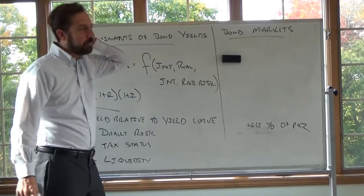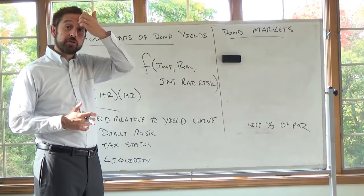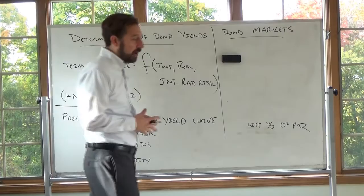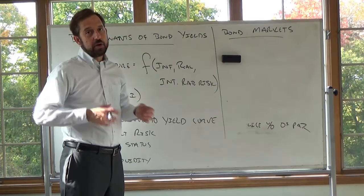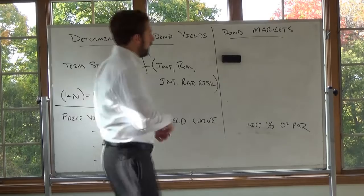From an intro to corporate finance perspective, it's not critically important, but you may see that when you're trading a bond, you're trading a clean price, but when the transaction goes through it's the dirty price. The dirty price takes account of accrued interest. So if you buy a bond and there's $20 of accrued interest, when the transaction goes through, you'll pay $20 more per bond for that accrued interest.